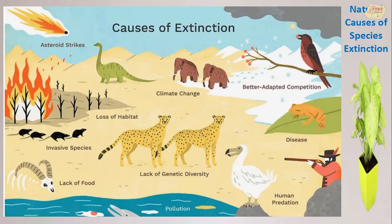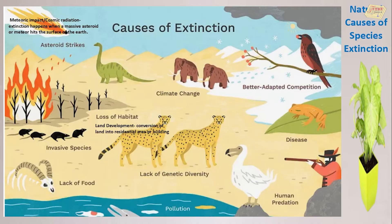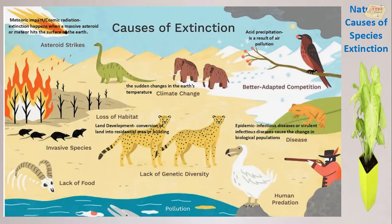What are the causes of extinction? Some causes of extinction are: meteoric impact or cosmic radiation — extinction happens when a massive asteroid or meteor hits the surface of the Earth. Loss of habitat or land development — conversion of land into residential areas or buildings. Diseases or epidemic — infectious diseases cause changes in biological populations. Climate change — sudden changes in the Earth's temperature. Acid precipitation — a result of air pollution. Invasive species — can change the abundance and diversity or the food web in an ecosystem by destroying and replacing its natural value and number.